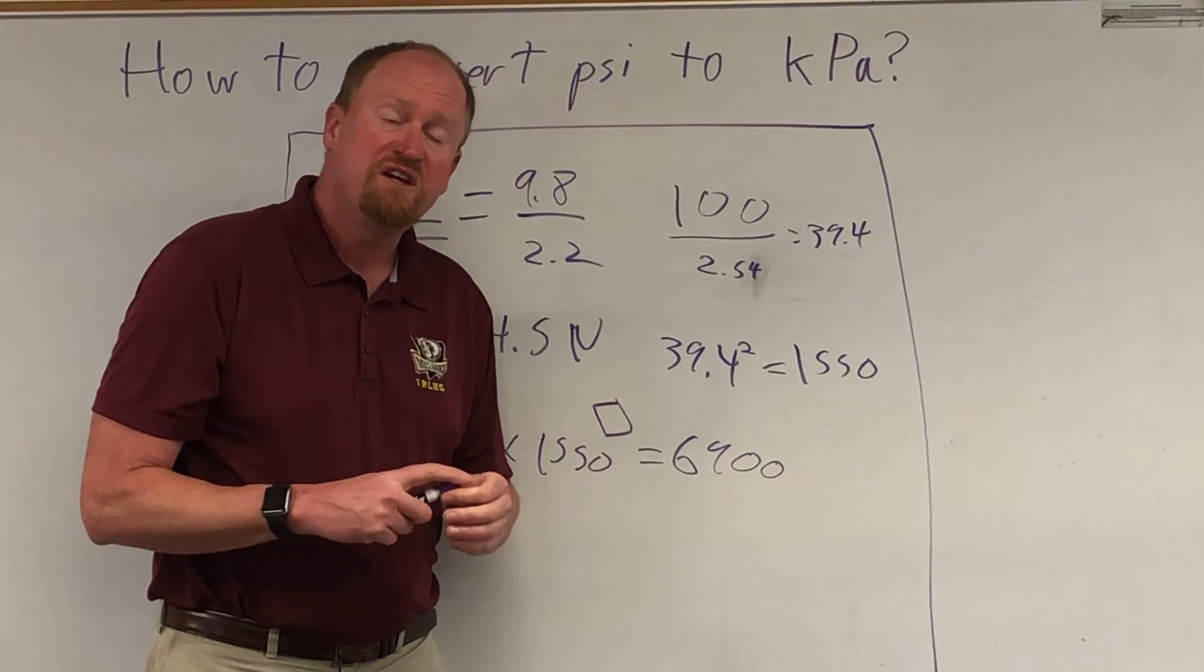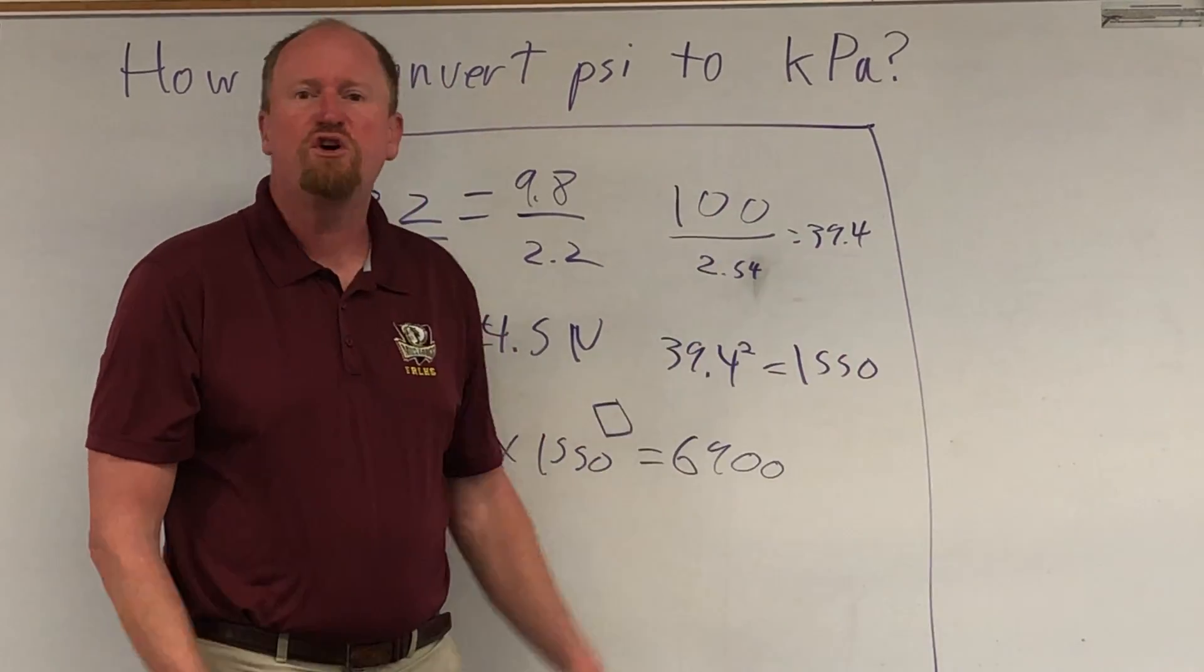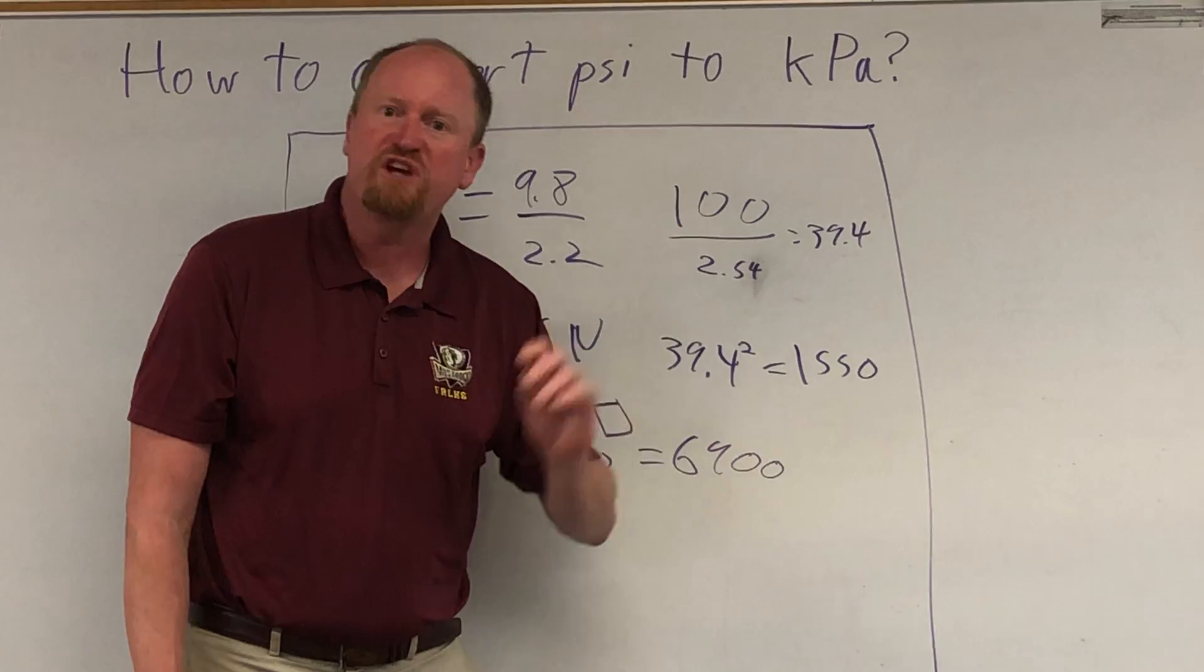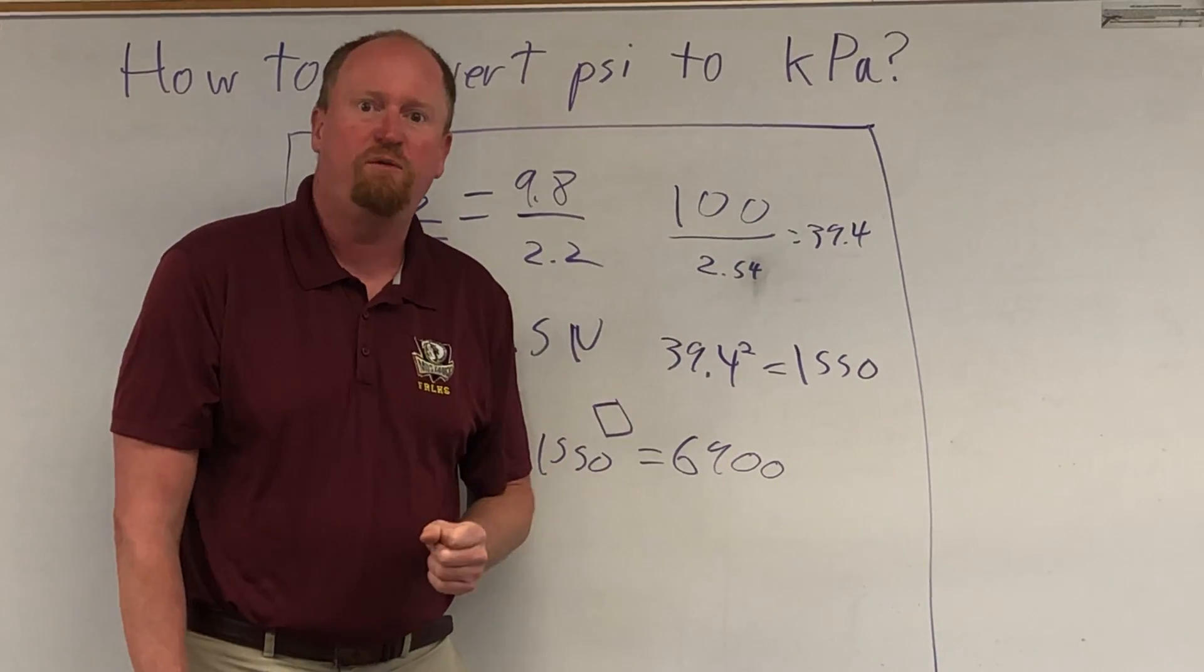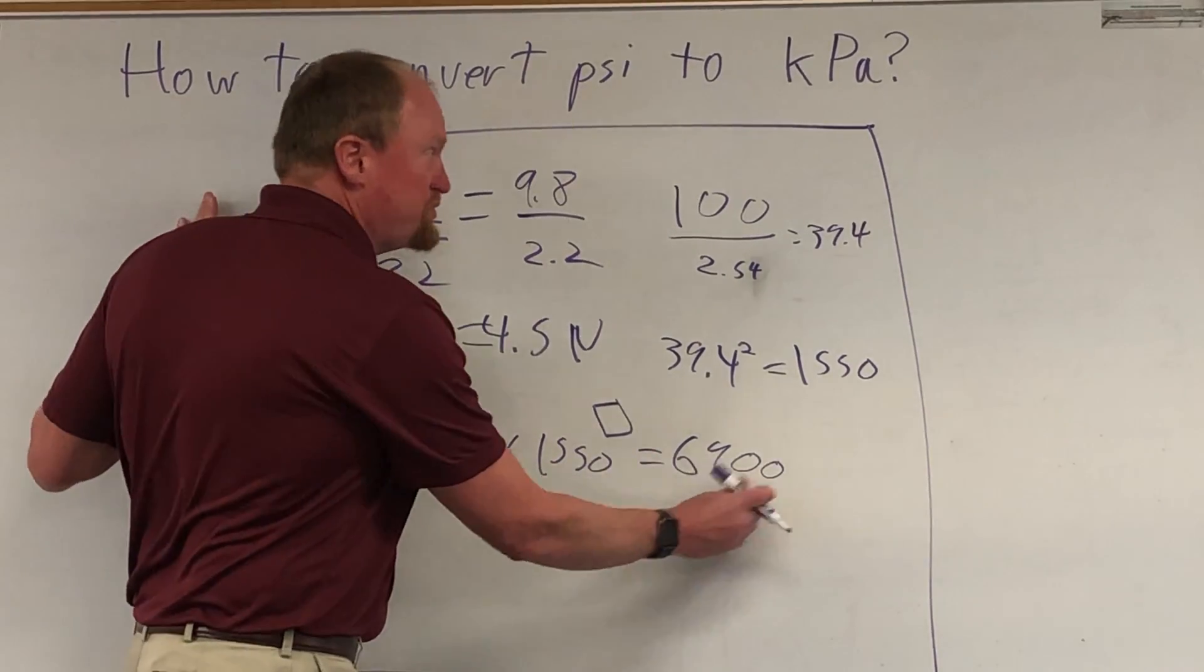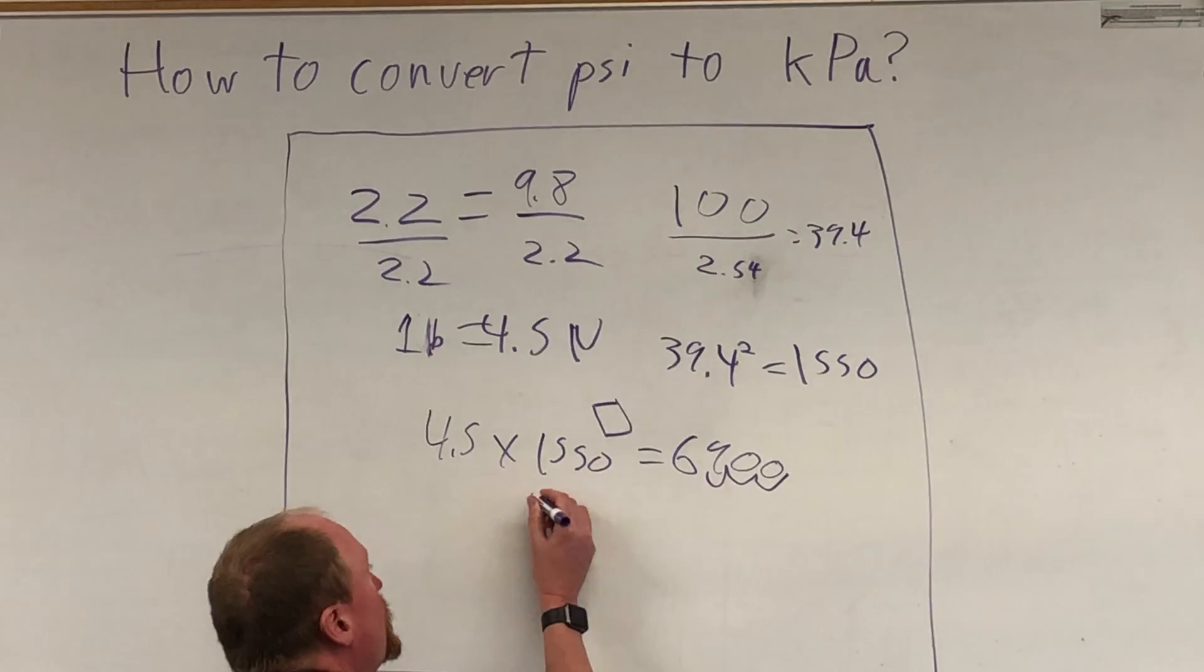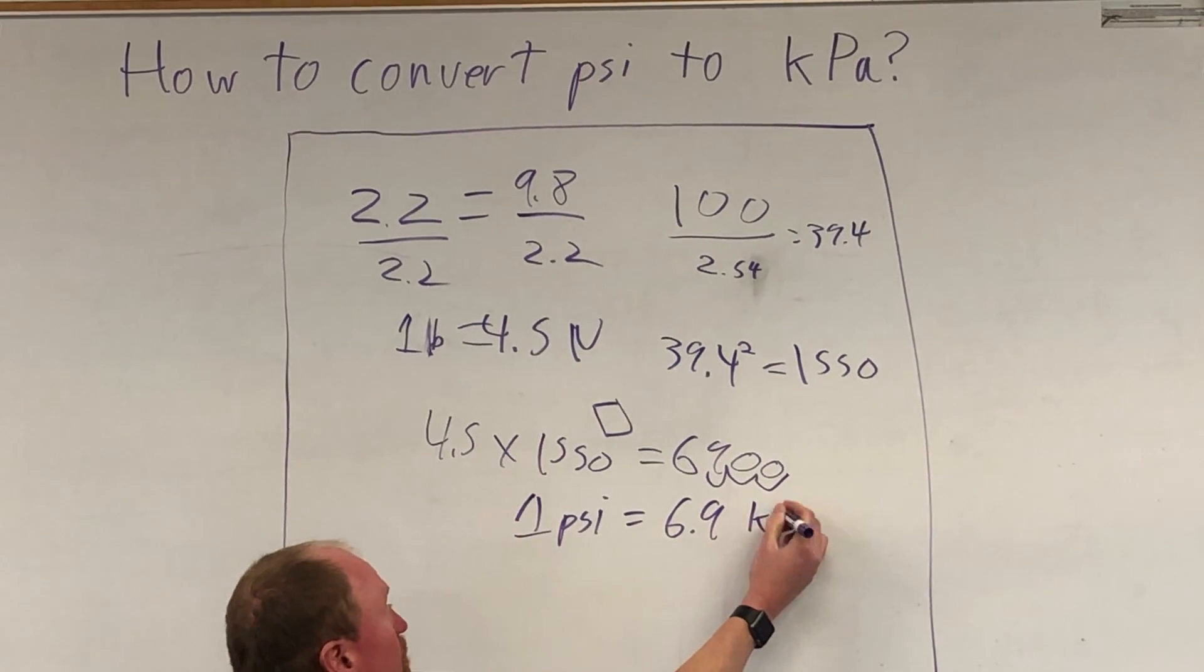So one psi of pressure is 6,900 pascals. Now, since a pascal is so weak, we generally don't use it. It does not make sense to list the pressure of a car tire in pascals. There'd just be too many zeros, and the more zeros you have, the more likely somebody is to lose one. And if somebody loses one or gains an extra zero, well, then you explode a tire. And nobody wants that to happen on the freeway. So we don't use pascals. We use kilopascals for 1,000 pascals. Move our decimal point, and so we basically get that 1 psi is equal to 6.9 kilopascals.